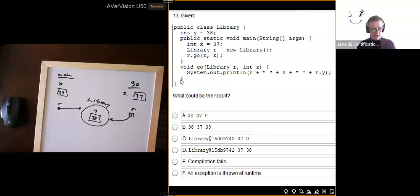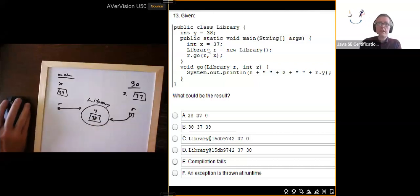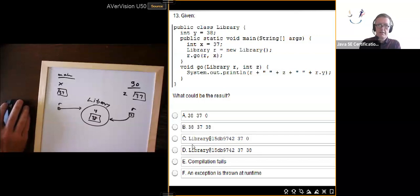dot y. So r is referring to an instance of type Library. Now is there a toString in Library? No there isn't, so it's going to call the one on object, the one that's inherited, which is basically going to give you the name of the class, the @ sign, and then hash code value. So you now have it reduced down to C or D here. Don't care about the number, that's just a hash code value.